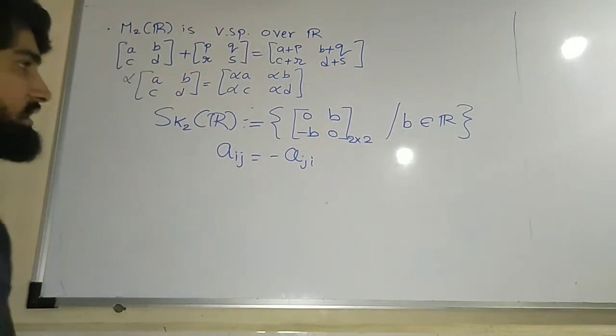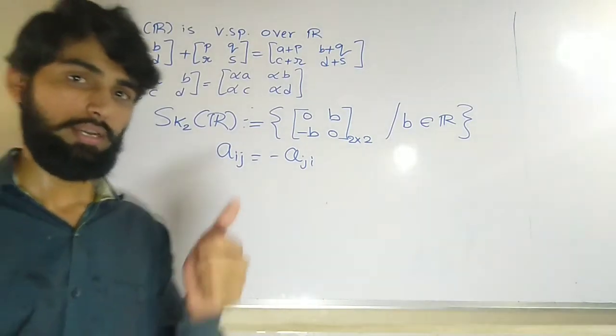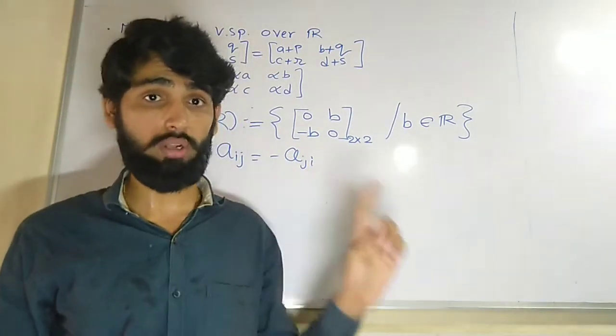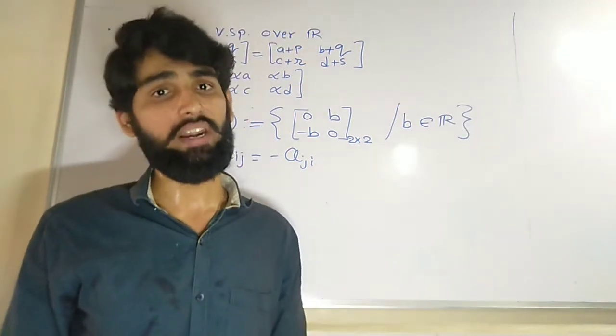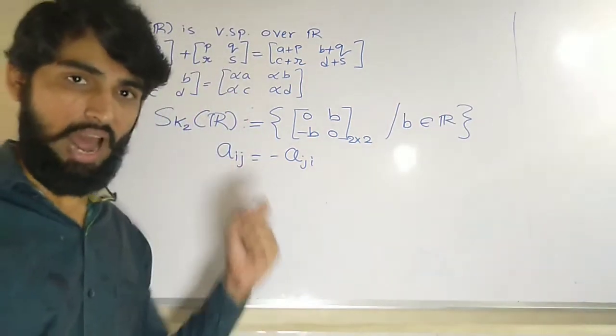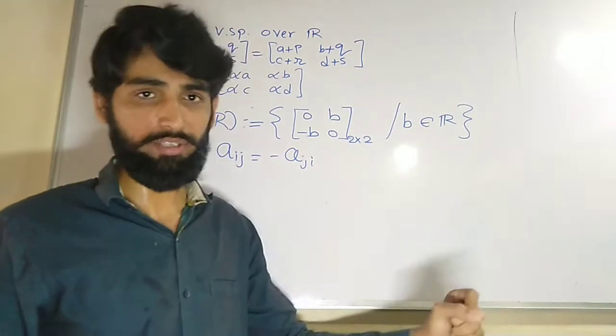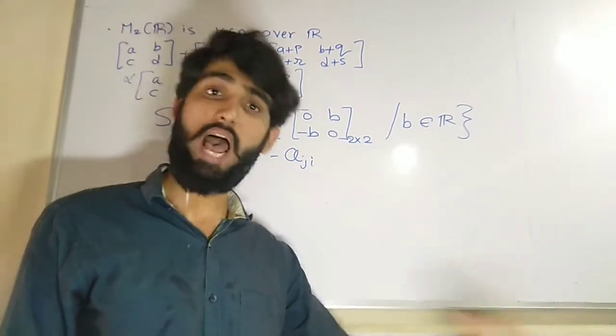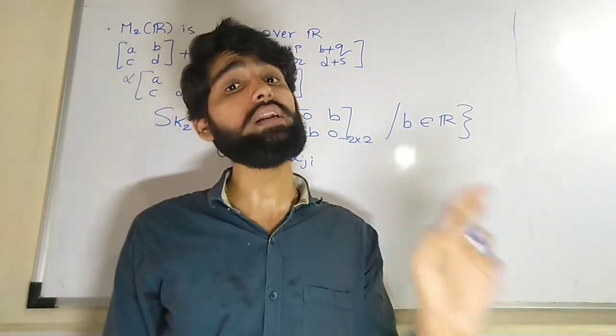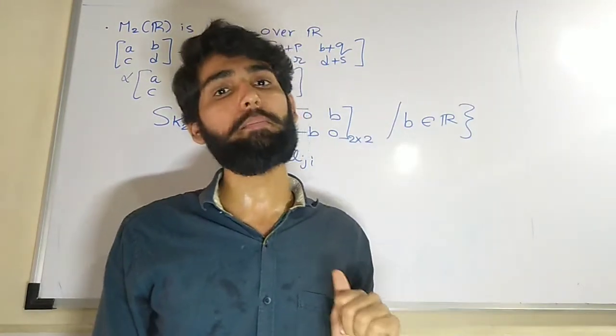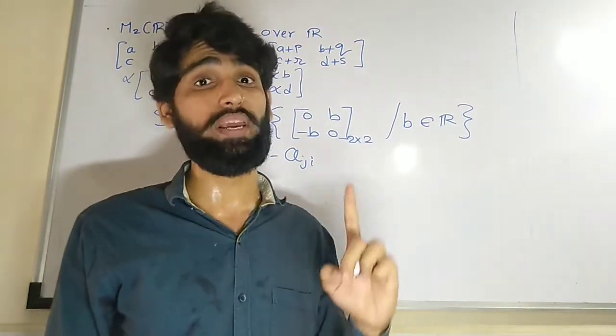So according to that condition, diagonals must be zero. If I keep b over here, over here it will be minus b. So it is a matrix of this kind: [0, b; -b, 0] where b is a real number. So we know that this is a set of all skew symmetric matrices. It is non-empty since the zero matrix is an element of it. After that, if you consider alpha times one skew symmetric matrix plus another skew symmetric matrix, the answer will be again a skew symmetric matrix. Hence, you can conclude skew symmetric matrix is also a subspace of M2R.